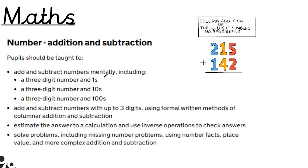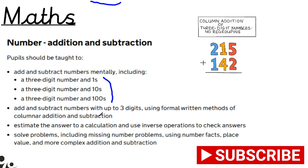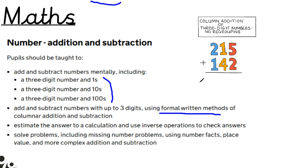Addition and subtraction — it's all about three-digit numbers in year three. Your child should be able to add and subtract a three-digit number using a formal written method, such as column method, though they might use a different method in school. They need to be able to add ones to a three-digit number, tens to a three-digit number, and hundreds to a three-digit number. As long as their place value is secure, I don't see any reason why they can't use column method.